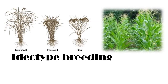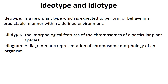In this video, I am going to talk about idiotype breeding. Idiotype is a new plant type which is expected to perform or behave in a predictable manner within a defined environment. There are two similar-sounding terms: idiotype, which is a new designed plant type, and idiotype (karyotype), which refers to the morphological features of chromosomes of a particular plant species, also called an idiogram — the diagrammatic representation of chromosome morphology.